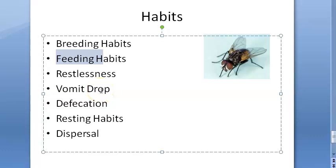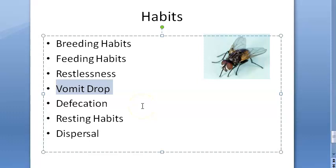House flies are also attracted to sputum, feces, and discharges from wounds such as pus. They are very restless insects, moving back and forth between food and filth - this is how they spread infection. The vomit drop also spreads diseases as they vomit to dissolve solid food. They also defecate during the day, depositing bacteria on food.